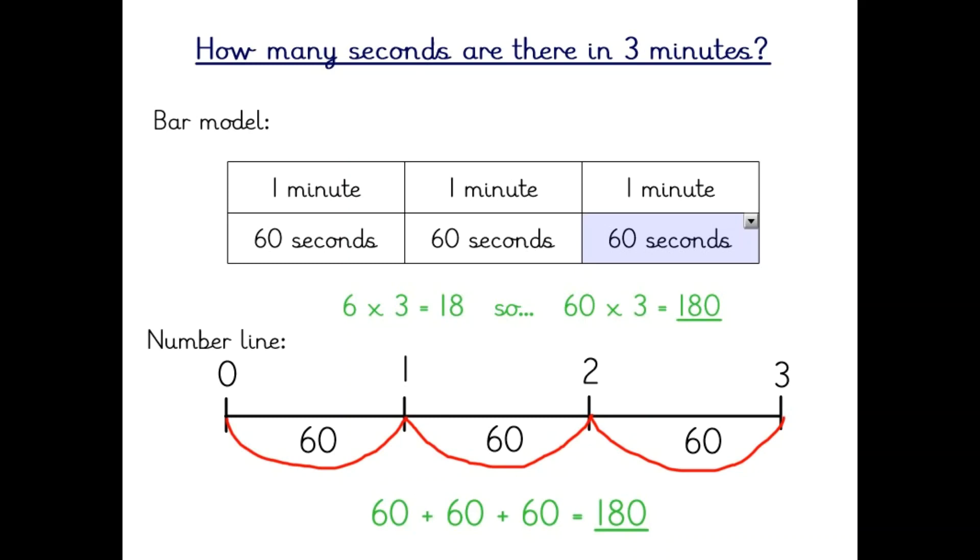Or I could use my number line and jump up 60 seconds each time until I get to three minutes. Three lots of 60 or 60 add 60 add 60 is 180. So there are 180 seconds in three minutes.